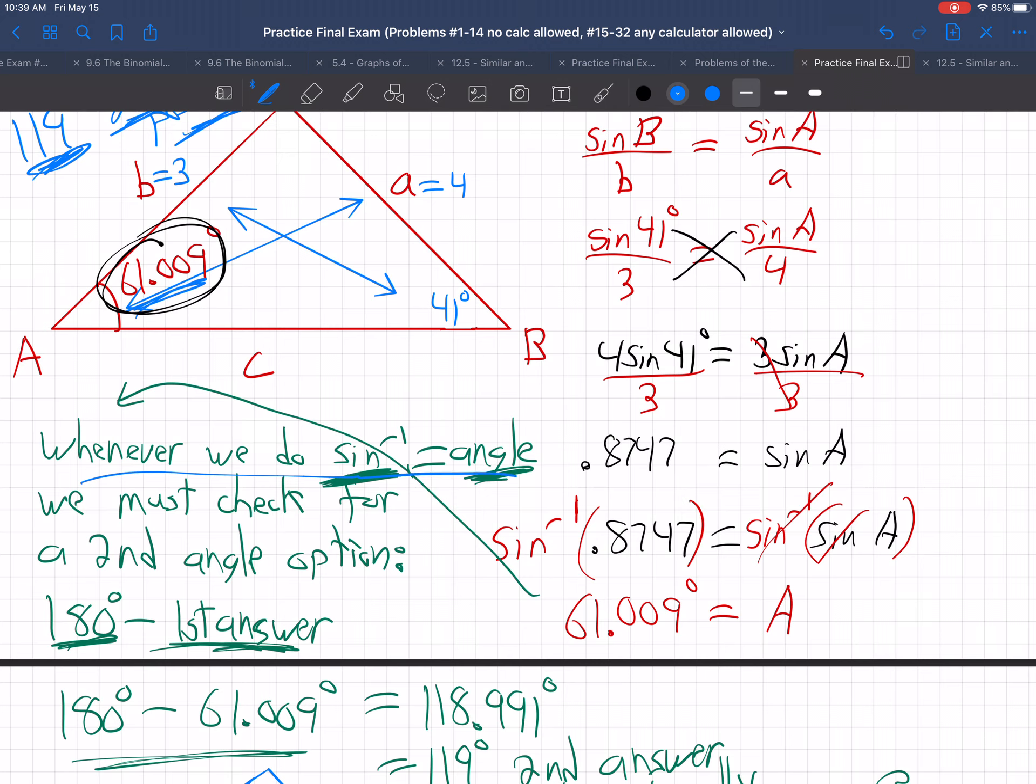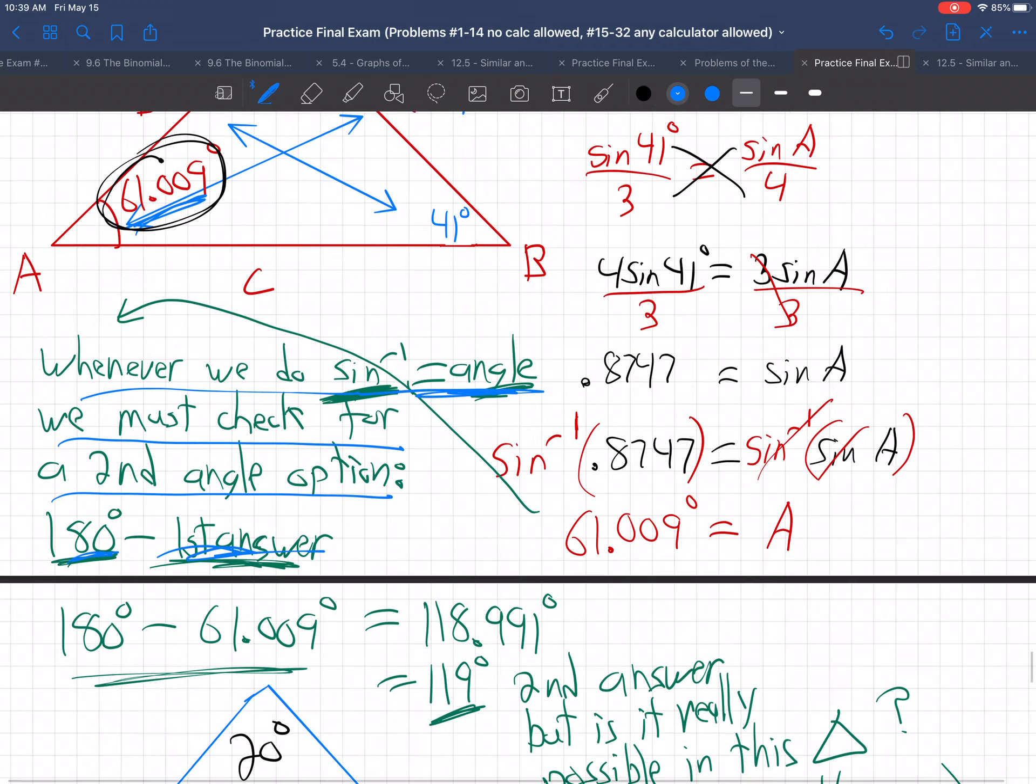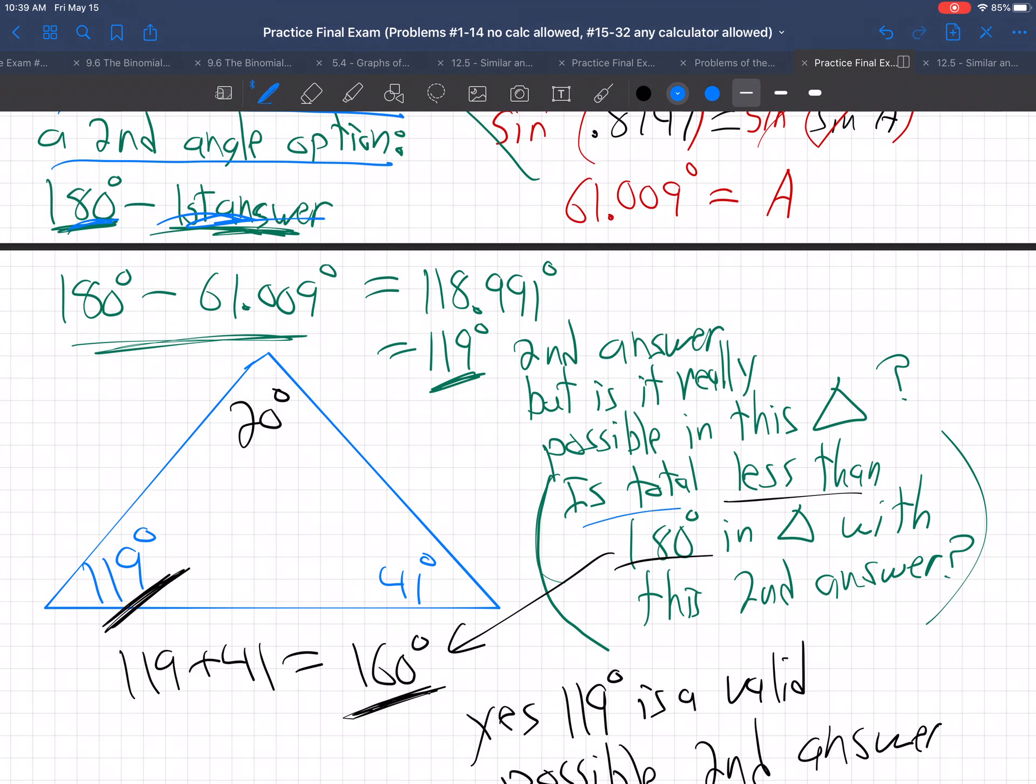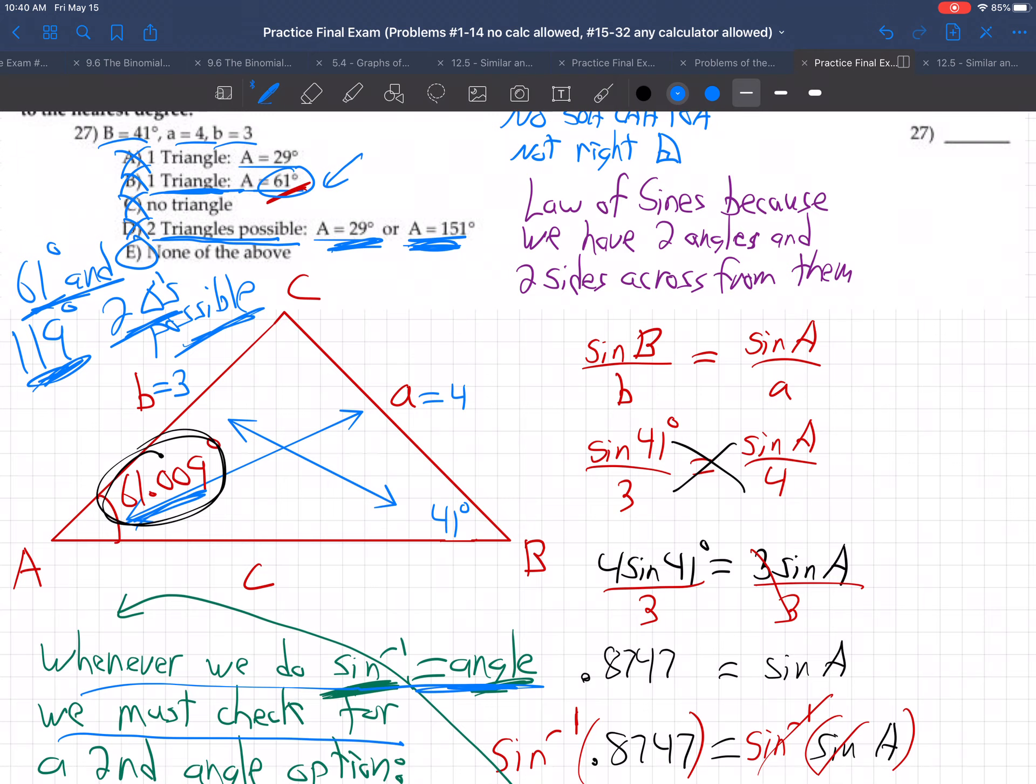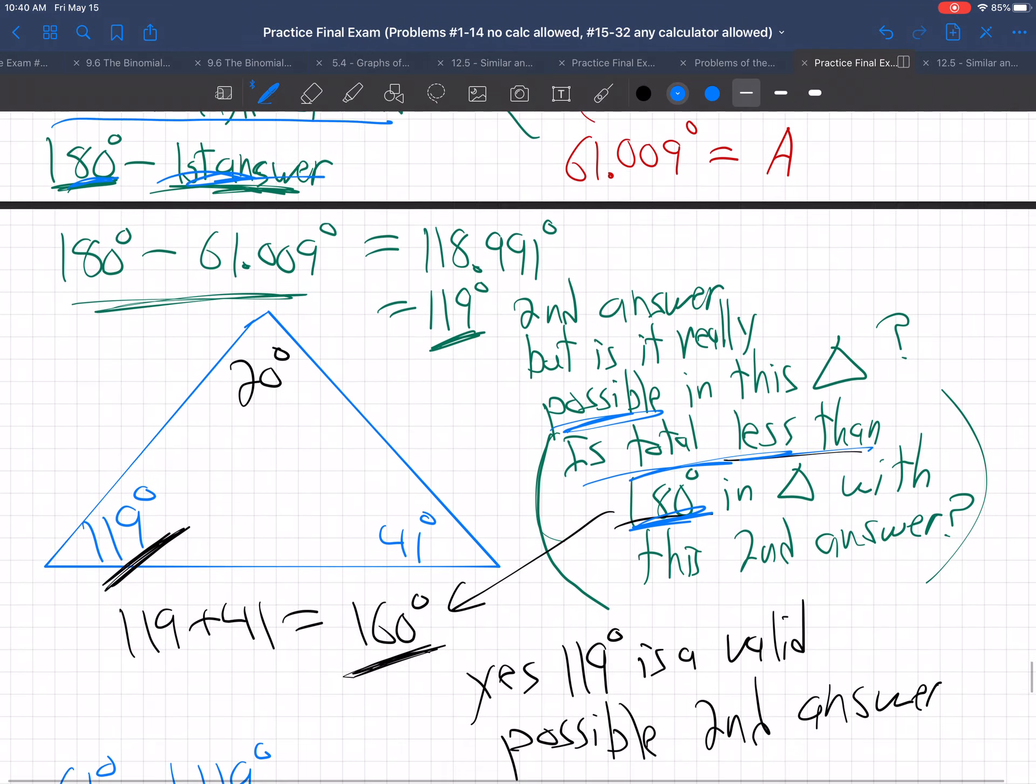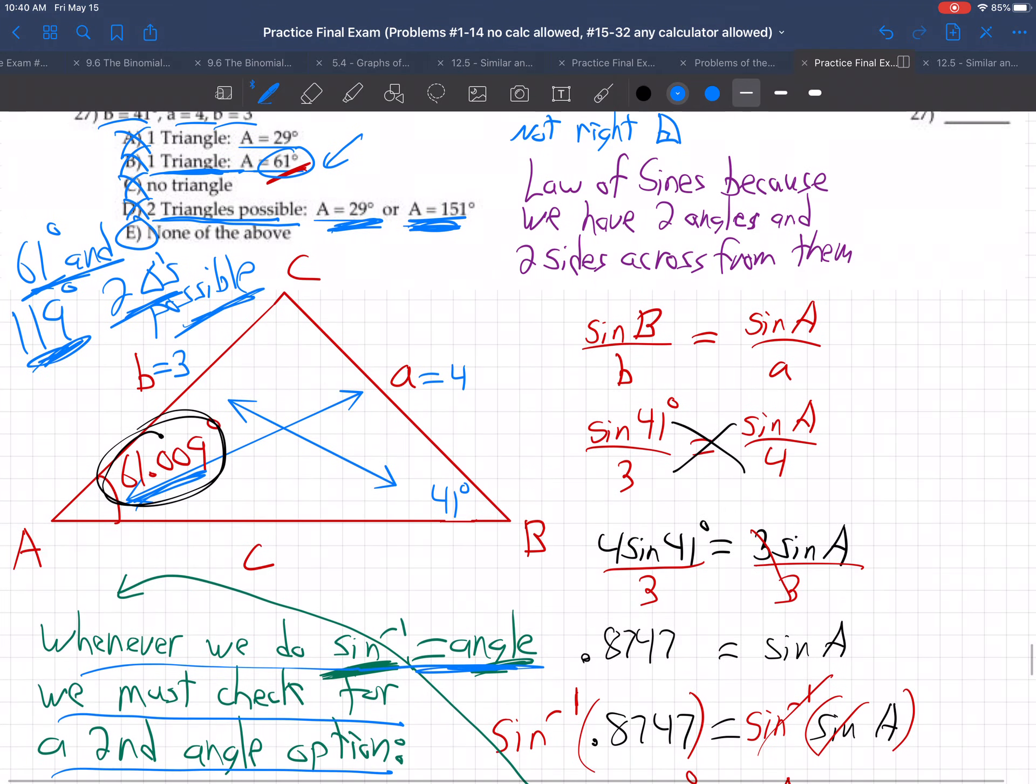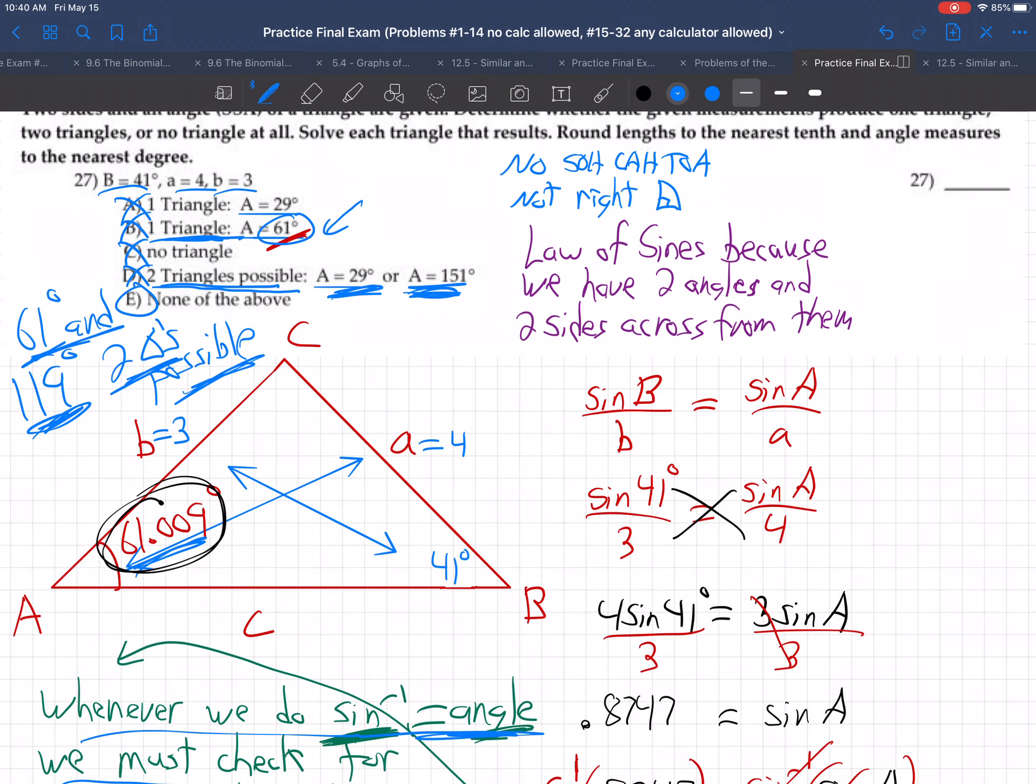There we go. And that's the key. Whenever we do sine inverse and get an answer, we must check for a second angle option, 180 minus the first answer. Get that. But then is the total less than 180? So it's possible or not possible. If it comes out more than 180, then it's not possible. You throw out that second answer and just keep only the first. That's when you get that would have been the only one triangle answer, but the second did work. 119 does work. There's two possible. So none of the above. That's tricky.